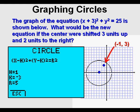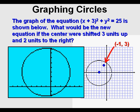We can also go to conics on the graphing calculator. If we enter an H value of negative 1, a K value of 3, and a radius of 5 here, this is what we get when we graph it.